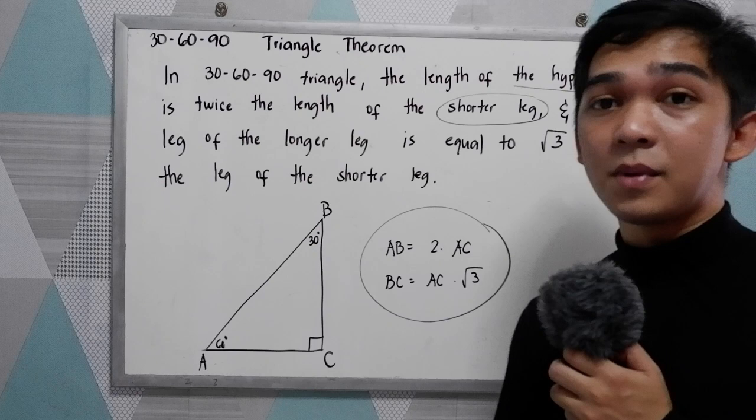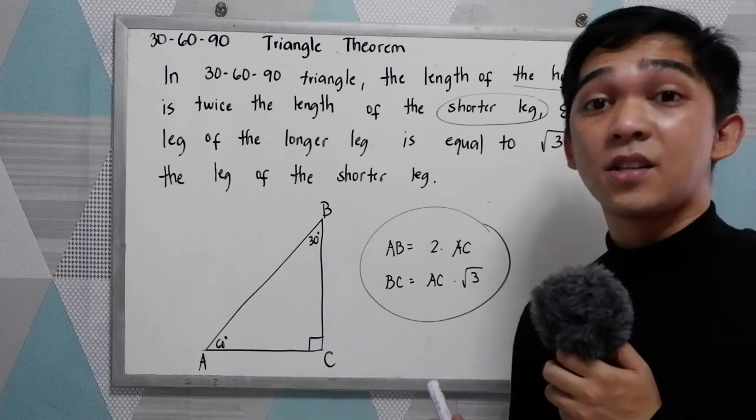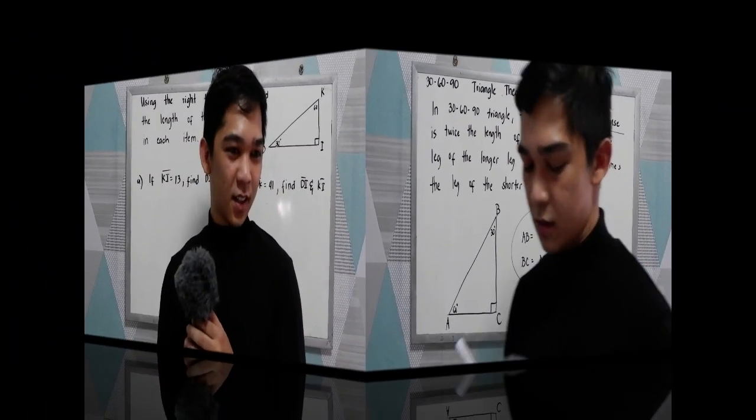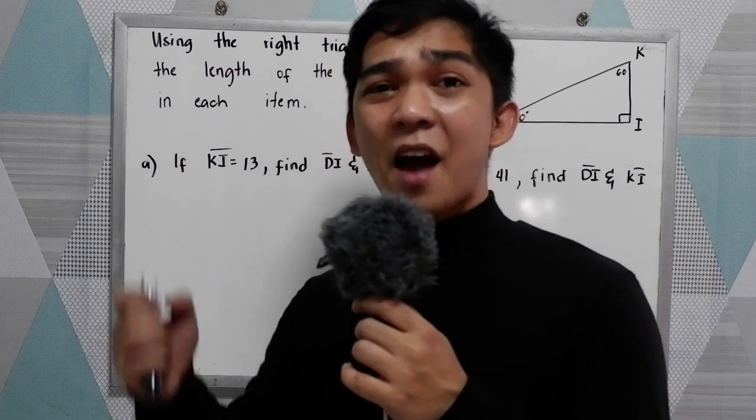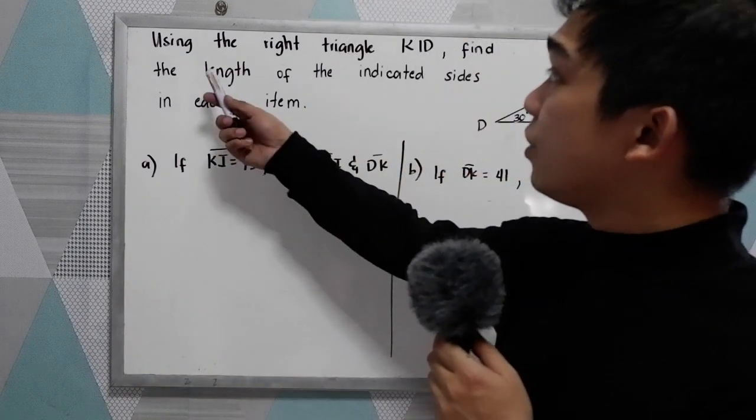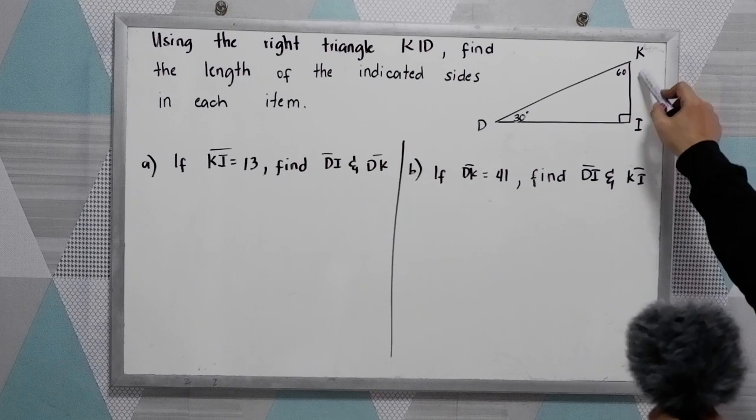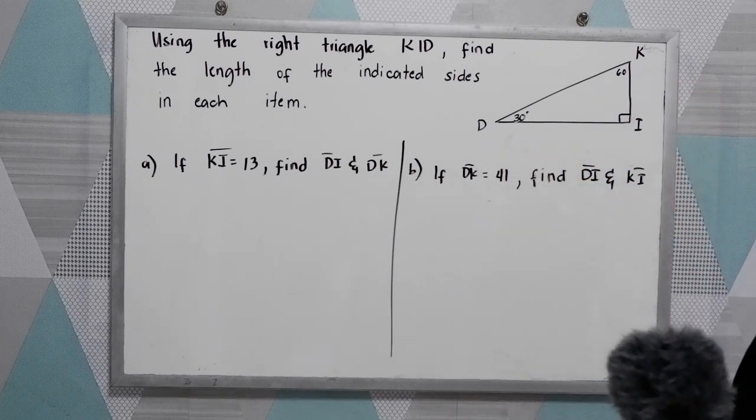Now to apply this theorem, let's have some examples and exercises. Using the right triangle KID, find the length of the indicated sides in each item.